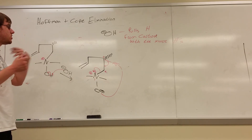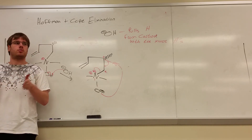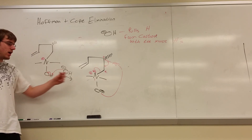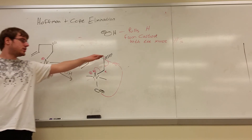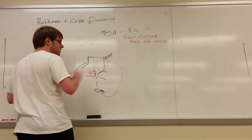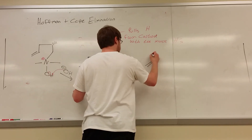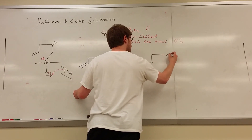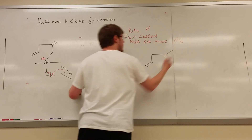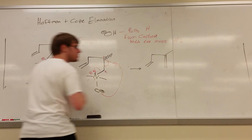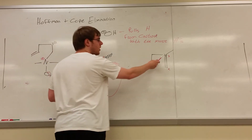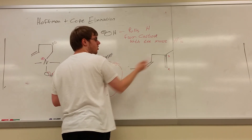So the Cope elimination is just like the Hofmann, only instead of making the nitrogen positive by adding carbons to it, you use hydrogen peroxide to add an O⁻ as the fourth bond. But from there it's basically the same: deprotonate a hydrogen, form a carbon-carbon double bond, and kick the nitrogen out. The final product of this elimination would be: here's carbon two, here's carbon three, and remember — stereochemistry disappears when you make a double bond or when you're attached to one. This was dashed originally, but it's no longer dashed.